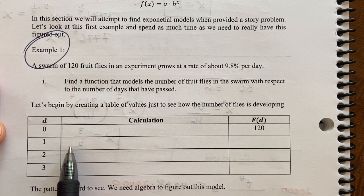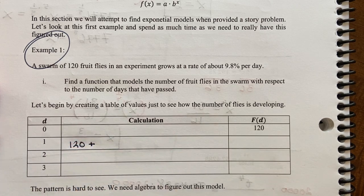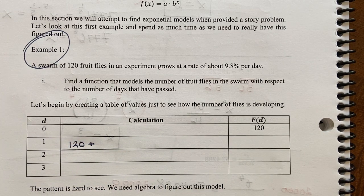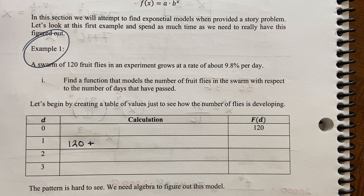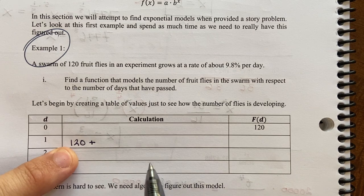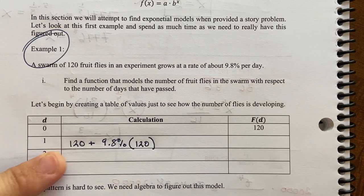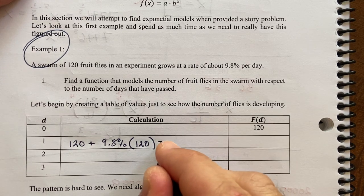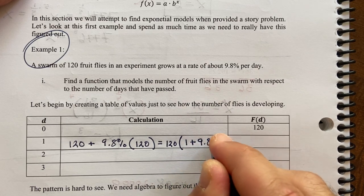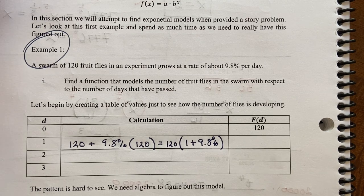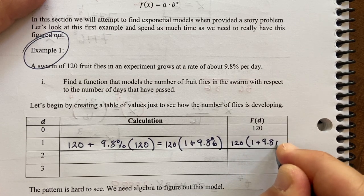So after one day, we have previously 120, and then we're going to add to this amount after a day. The swarm is growing at 9.8% per day. So here's 120 from day zero, and then we're adding 9.8% of 120, the previous day's total. If you factor out 120, you'd get 120 times 1 plus 9.8%.